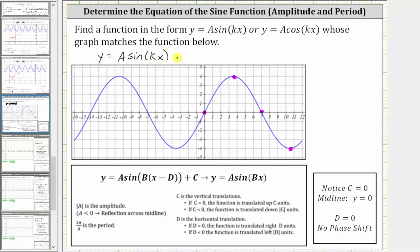The general form for a transformation of the sine function is in this form here, but because we don't have a phase shift, d is equal to zero. We also don't have a vertical shift because the midline is y equals zero, and therefore c is equal to zero, which leads us to the form y equals a sine bx.